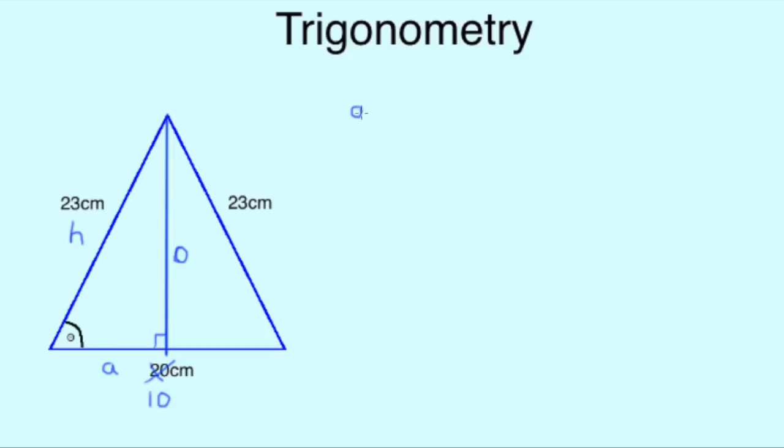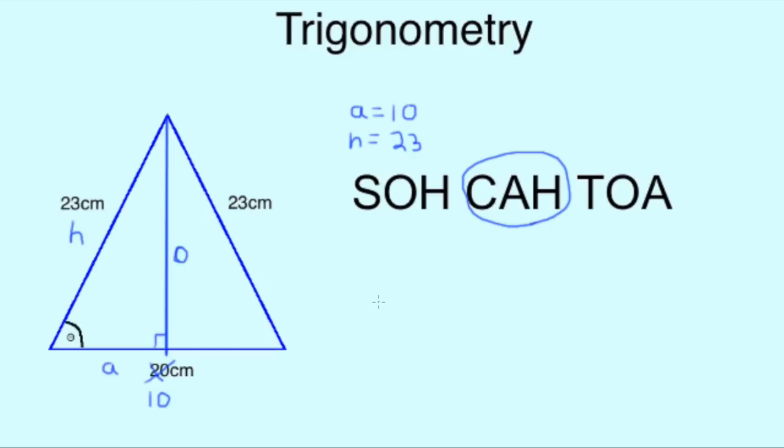We can see the sides we are now working with are the adjacent, which is now 10, and our hypotenuse, which is still 23. So, looking again to our SOH CAH TOA, we can see that A and H only appear in CAH. Again, drawing out our triangle, we write our letters C, A, H in the rainbow shape. Throw in our divide line between the top letter and bottom two, our theta on the bottom left, and finally, times to separate the two bottom letters.